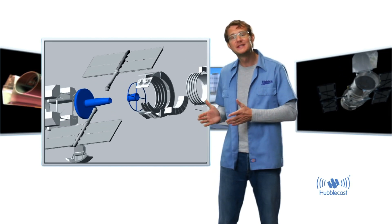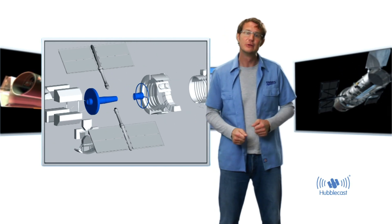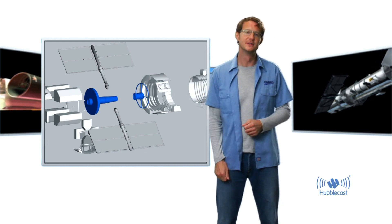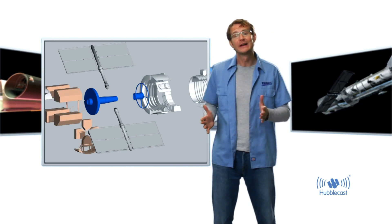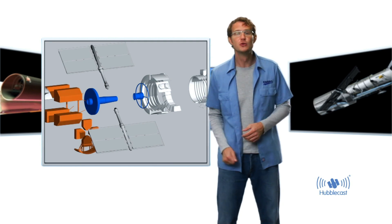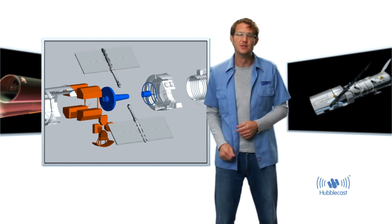Then there are a number of secondary mirrors that send the light to the instruments. Now there are two main types of instruments. First there are cameras, which essentially do what any normal digital camera does, they take images.